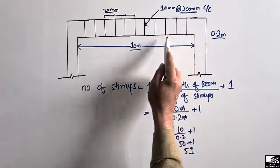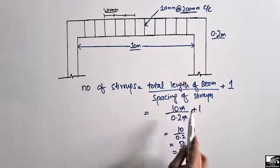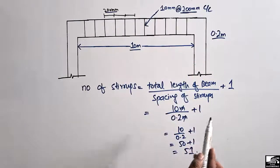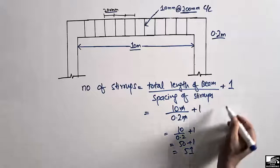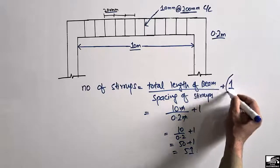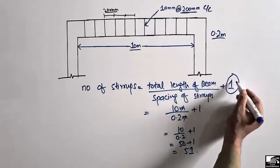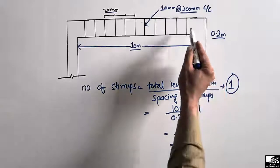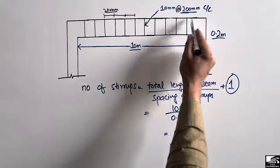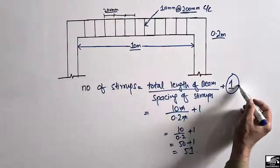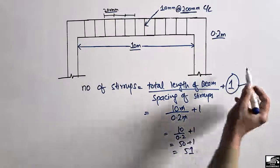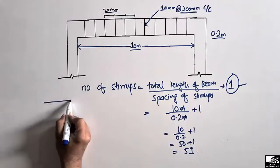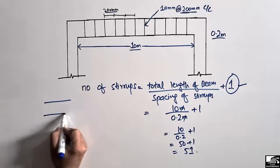So 51 number of stirrups are used in this beam. This is the way to find out the number of stirrups. Now the question is: why do we add 1? Because we ignore the last stirrup in our calculation, that's why we add 1. Let's take a simple example to illustrate this.